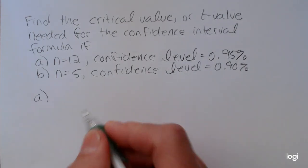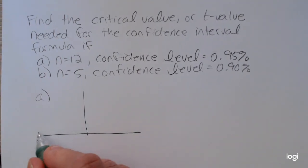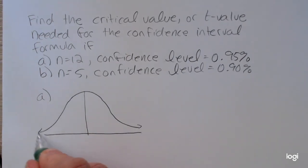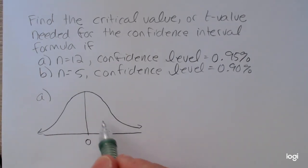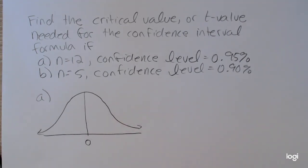So to sketch what that represents, I have a bell-shaped distribution. The t distribution is bell-shaped with a mean of zero, but its exact look depends on the degrees of freedom. So the t distribution tends to be a little bit shorter and wider than the z interval. But as our sample size increases, the t distribution approaches the normal distribution.